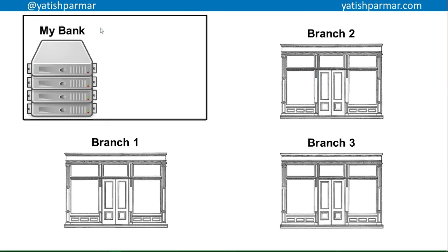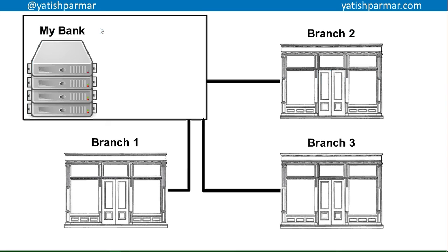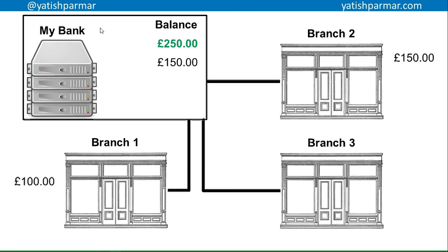Imagine a bank with three different branches, each connected to the main head office. You've been doing your paper round, you've got £250 on your bank balance, and you're going out for the weekend. You go to branch one and withdraw £100 — your balance goes down to £150 on the head office database. You stop at branch two and draw out another £150, so your balance is updated to £0. When you go to branch three and try to withdraw further money, that transaction is denied.